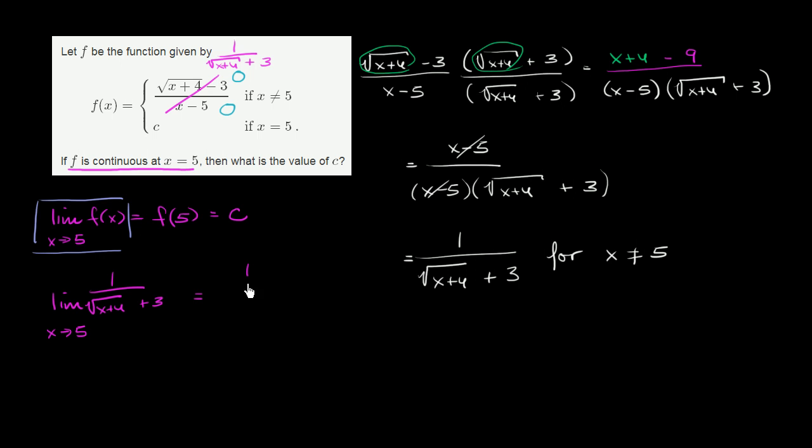It's going to be 1 over 5 plus 4 is 9. Principal root of that is 3, 3 plus 3 is 6. So if c is equal to 1/6, then the limit of our function as x approaches 5 is going to be equal to f(5), and we are continuous at x equals 5. So it's 1/6.